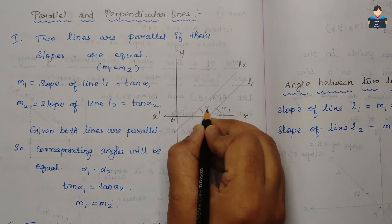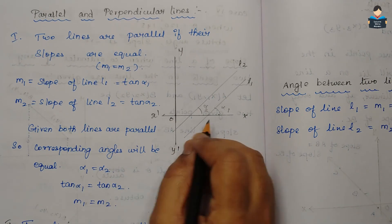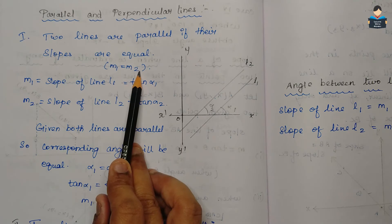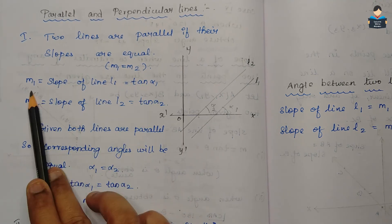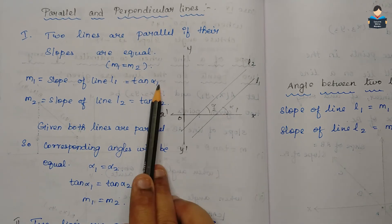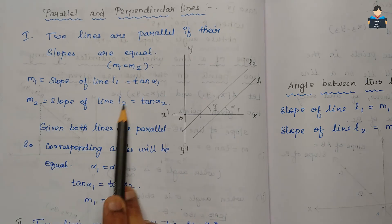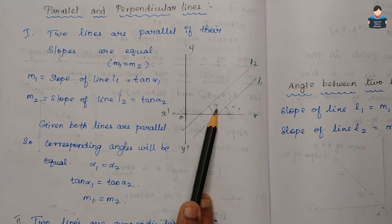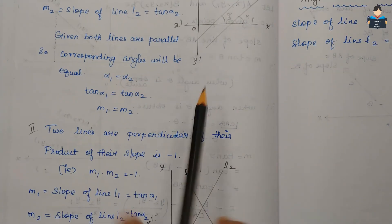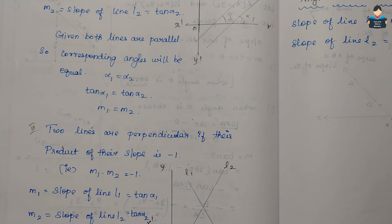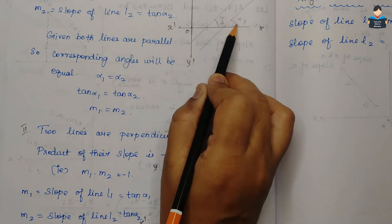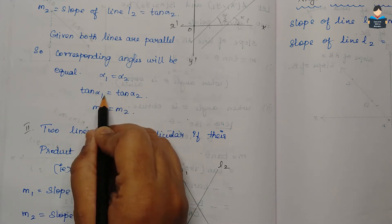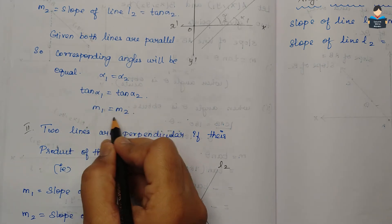For two lines to be parallel, their slopes must be equal, so M1 equals M2. Since M1 equals tan alpha1 and M2 equals tan alpha2, and for parallel lines the corresponding angles are equal — alpha1 equals alpha2 — therefore tan alpha1 equals tan alpha2, giving M1 equals M2.